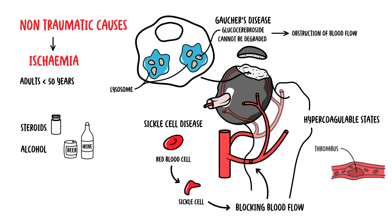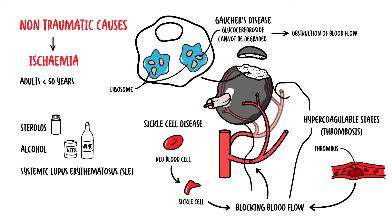Any hypercoagulable state can lead to thrombosis formation, which can occlude the artery and blood flow. Systemic lupus erythematosus and transplant patients are also at increased risk. Notably, non-traumatic causes are also impacted by genetic predisposition, since some people who use a lot of steroids and alcohol don't develop osteonecrosis while others do. Genetic factors are also implicated in hypercoagulability states and hypofibrinolysis.